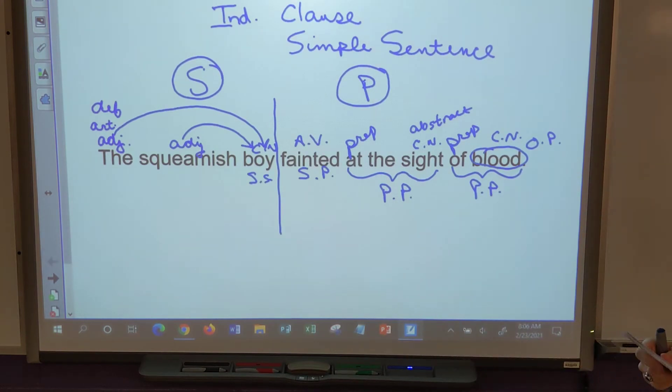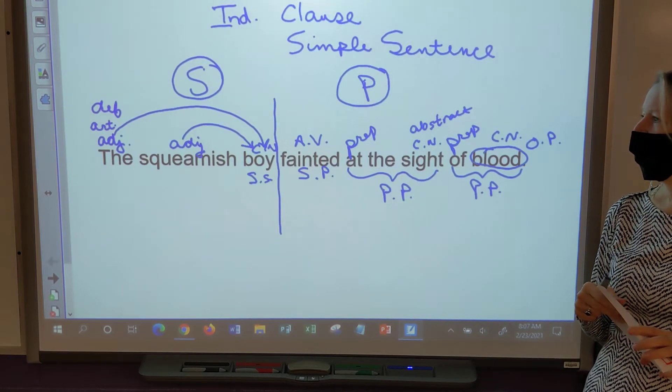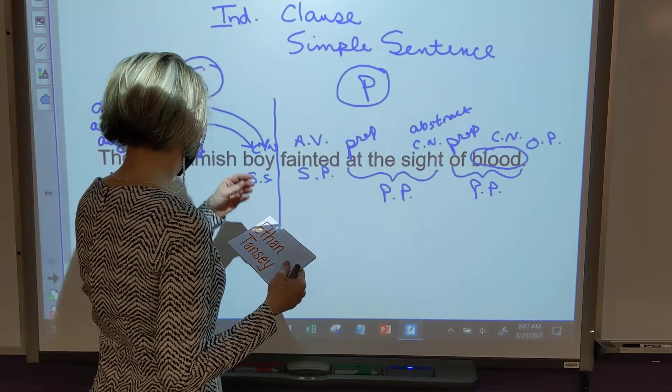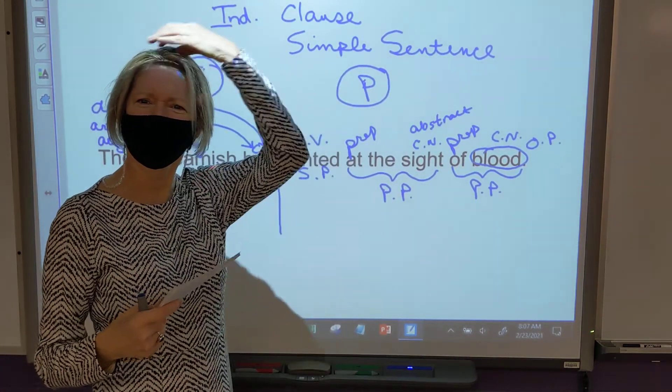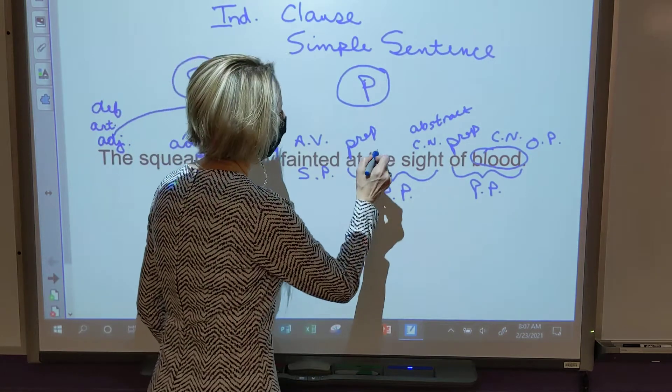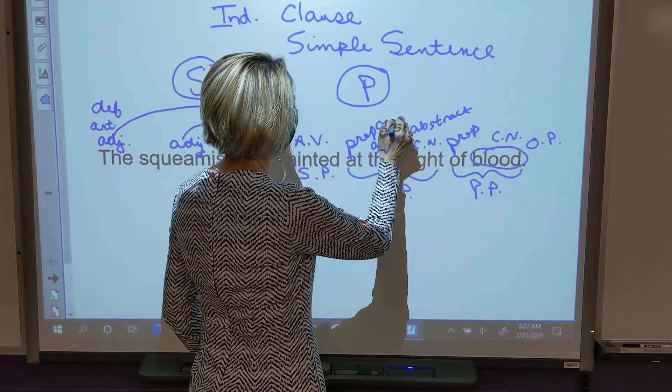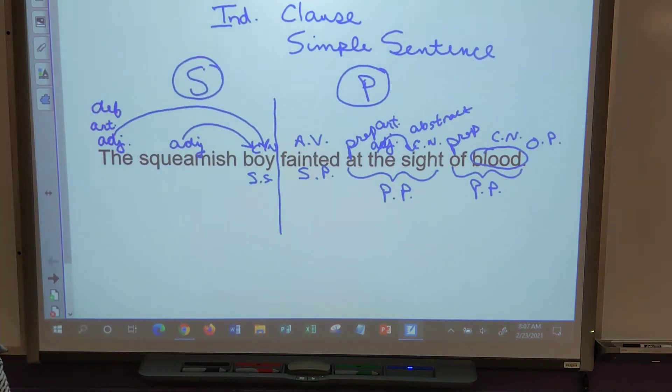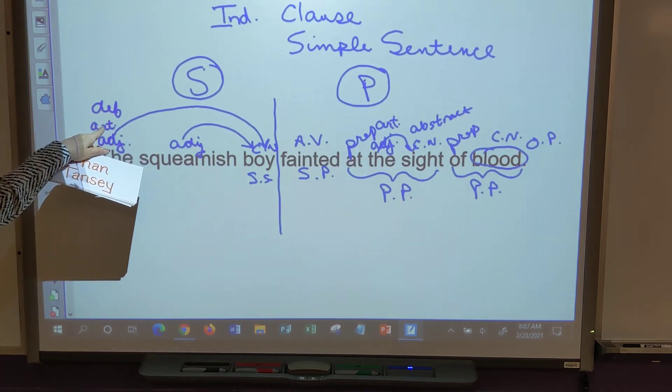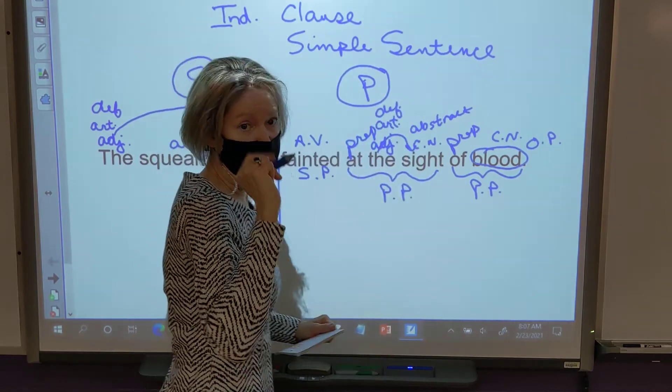All right Ethan, we've got this word not labeled yet. The is an adjective but it's also what kind of article, definite or indefinite? The is always definite because we're not talking about any sight, we're talking about the sight, right?